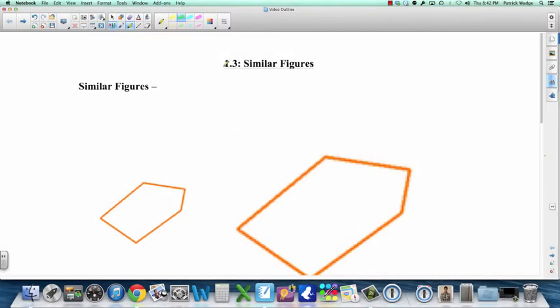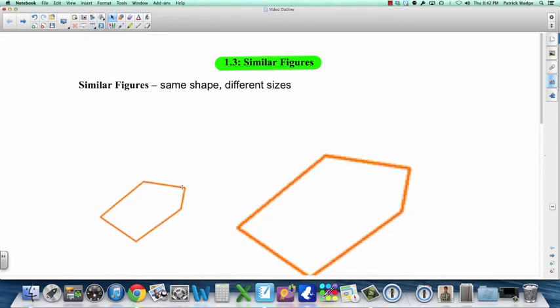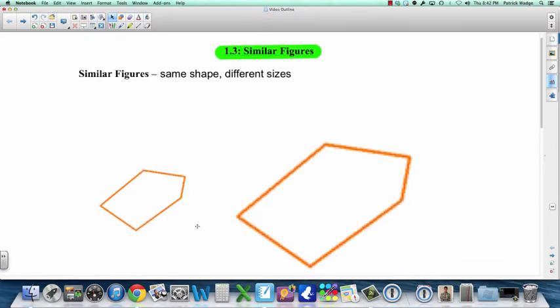Section 1.3 is on similar figures. So what are similar figures? Similar figures are shapes that have, well, they're objects that have the same shape but different sizes. Here's an example right here in the picture. I did the best I could to make these the same shape as each other, but obviously they're different sizes.